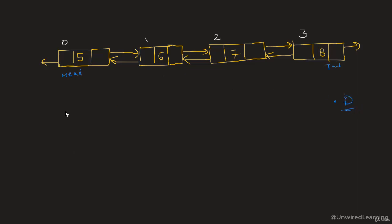If index position is equals to 0, all we have to do is start our current value from our head, go to our next value, then update the prev part and refer it to none. Now I am going to store my new head with this particular value.